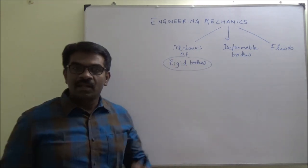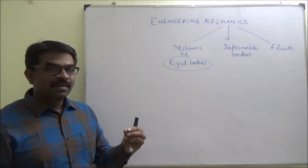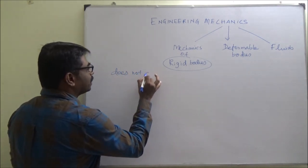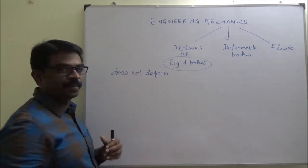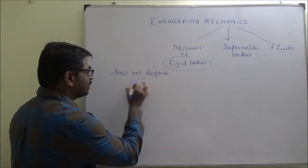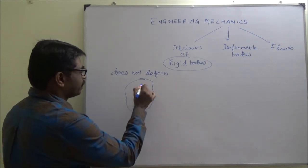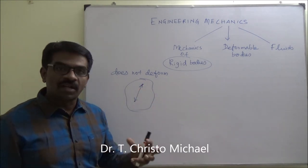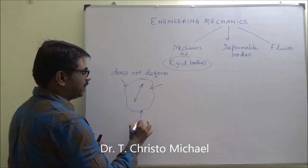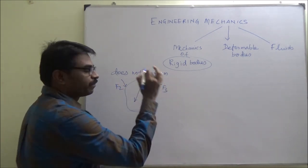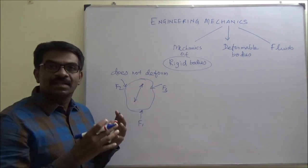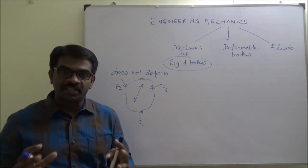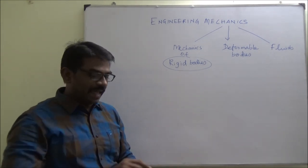You need to know what is a rigid body. A rigid body doesn't deform — it will not deform. More precisely, say for example you have a rigid body: the distance between any two points is always constant under the action of external forces. So the distance between two points is invariant — always. Then the body is considered a rigid body. Rigid bodies are broadly classified into Statics and Dynamics.